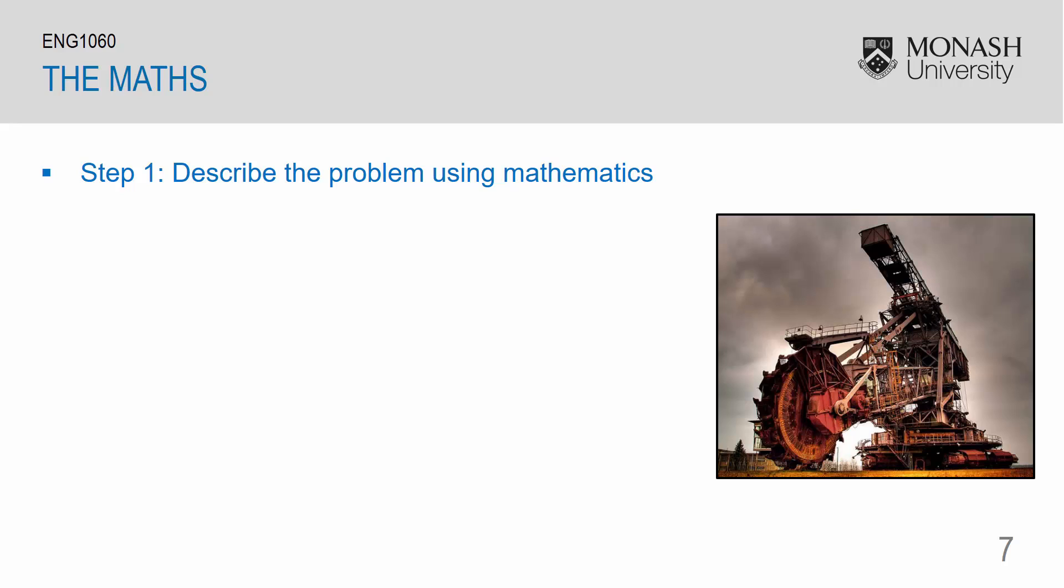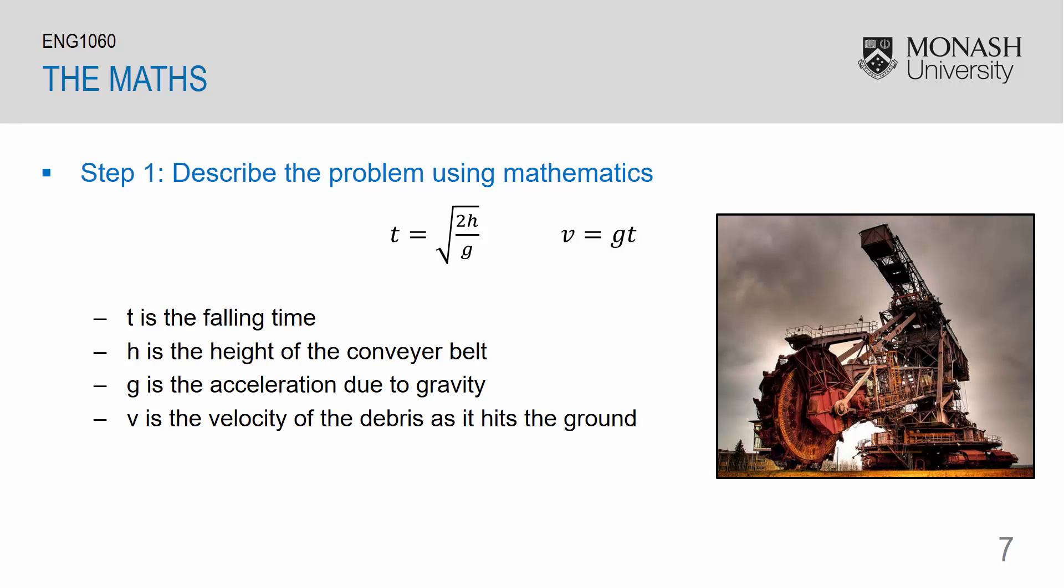So the first step is always to describe the problem using mathematics. We have two equations, one for the falling time and the other for the velocity at which the object hits the ground. So T is the falling time. H is the height of the conveyor belt. G is the acceleration due to gravity. And V is the velocity of the debris as it hits the ground.